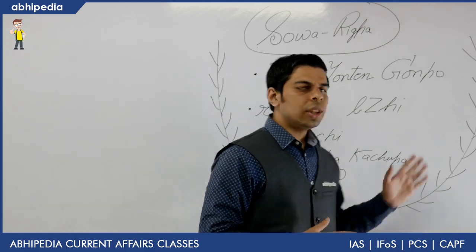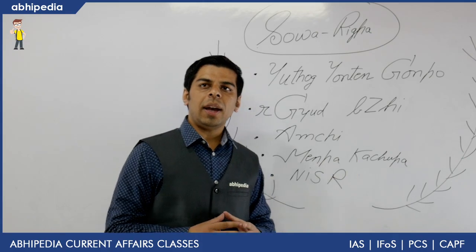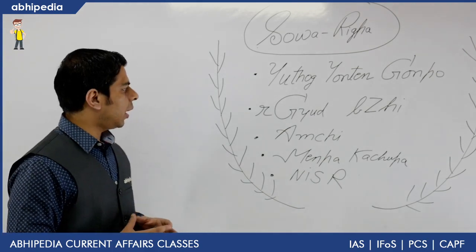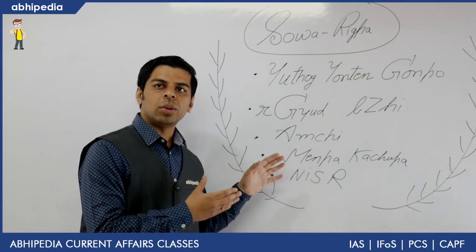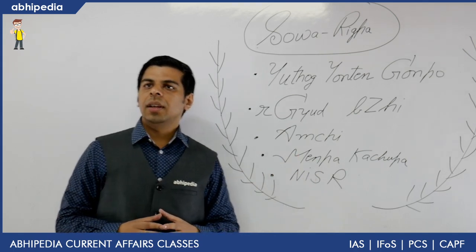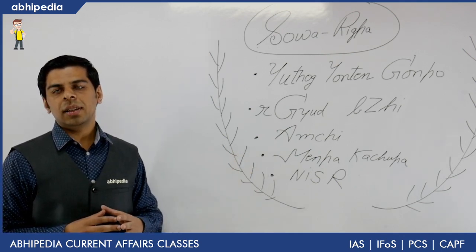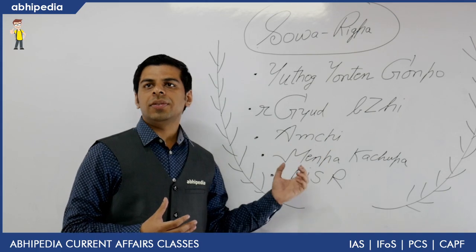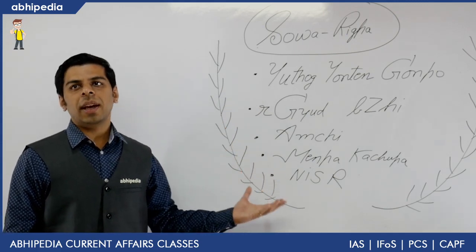When India sought recognition of Sova Rigpa from UNESCO, there is a country strongly objecting to it — China. China and India are at loggerheads over claiming the legacy of Sova Rigpa, as the Tibetan system is also claimed by China. India has been steadily building its case: integrating Sova Rigpa into AYUSH, creating institutions, establishing a nodal agency, and now applying for intangible cultural heritage status. This is one of the irritants developing in the India-China relationship.